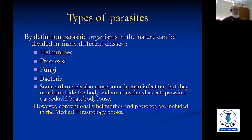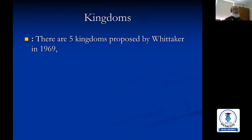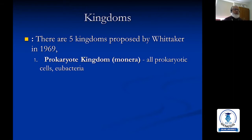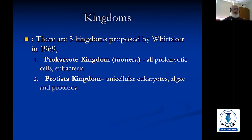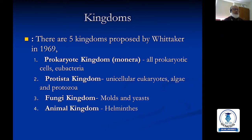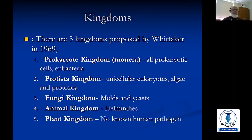Bacteria, fungi, and viruses are not included in medical parasitology books. There are five kingdoms proposed by Whittaker in 1969: the Prokaryote Kingdom (Monera — bacteria with prokaryotic cells), the Protista Kingdom (unicellular but eukaryotic — algae and protozoa), the Fungi Kingdom (molds and yeasts, eukaryotic), the Animal Kingdom (helminths), and the Plant Kingdom. There are no known human pathogens in the Plant Kingdom. Human pathogens are present in the Animal, Fungal, Protista, and Prokaryote Kingdoms.